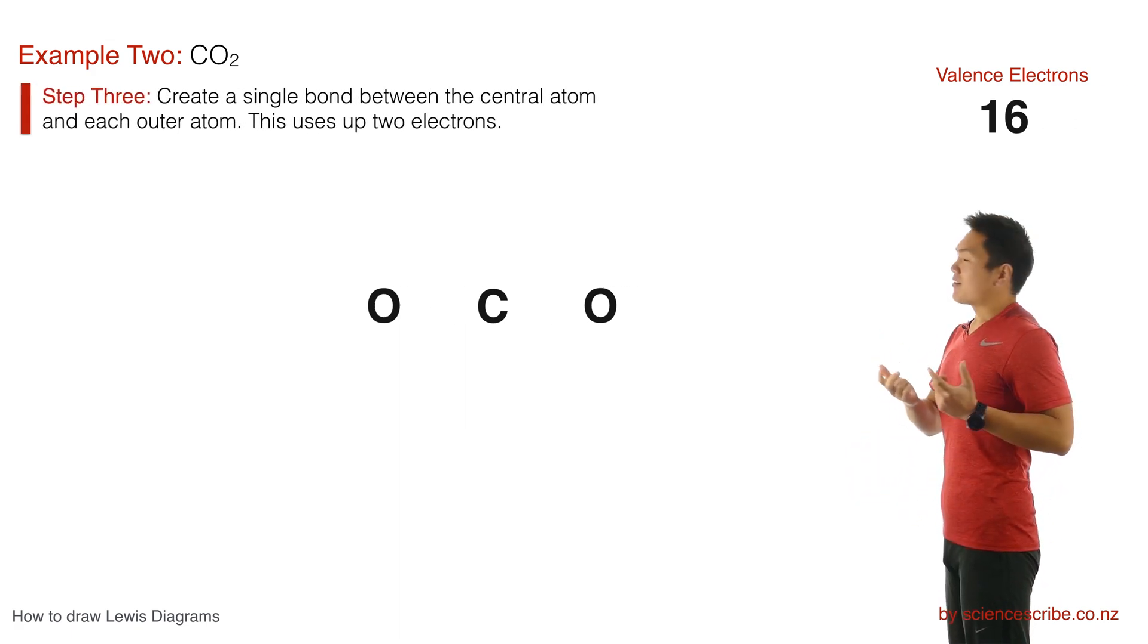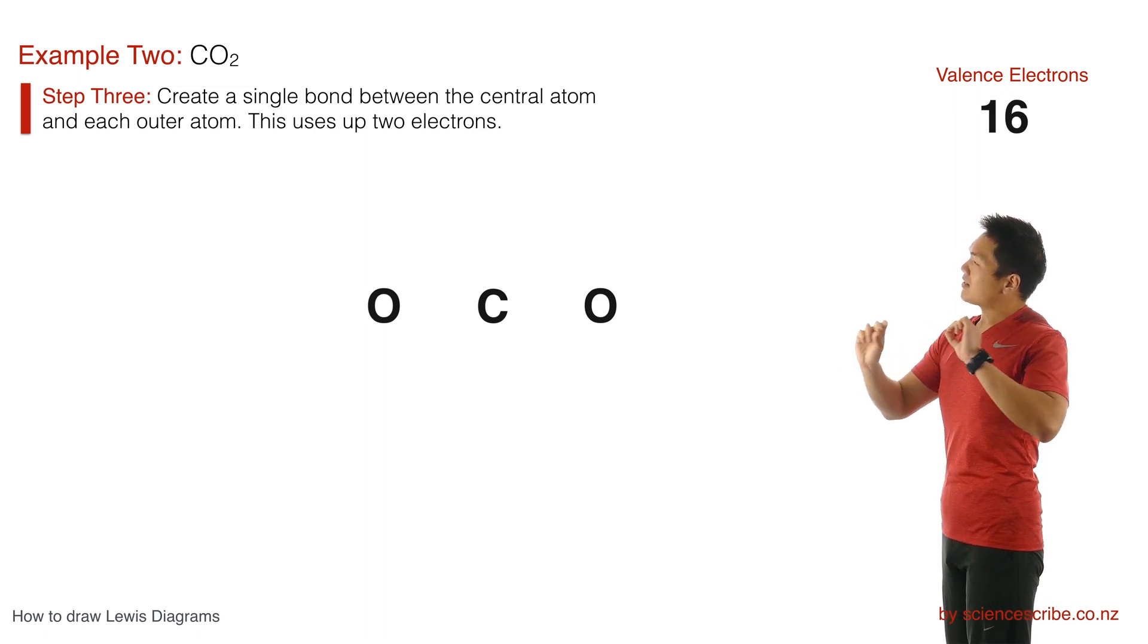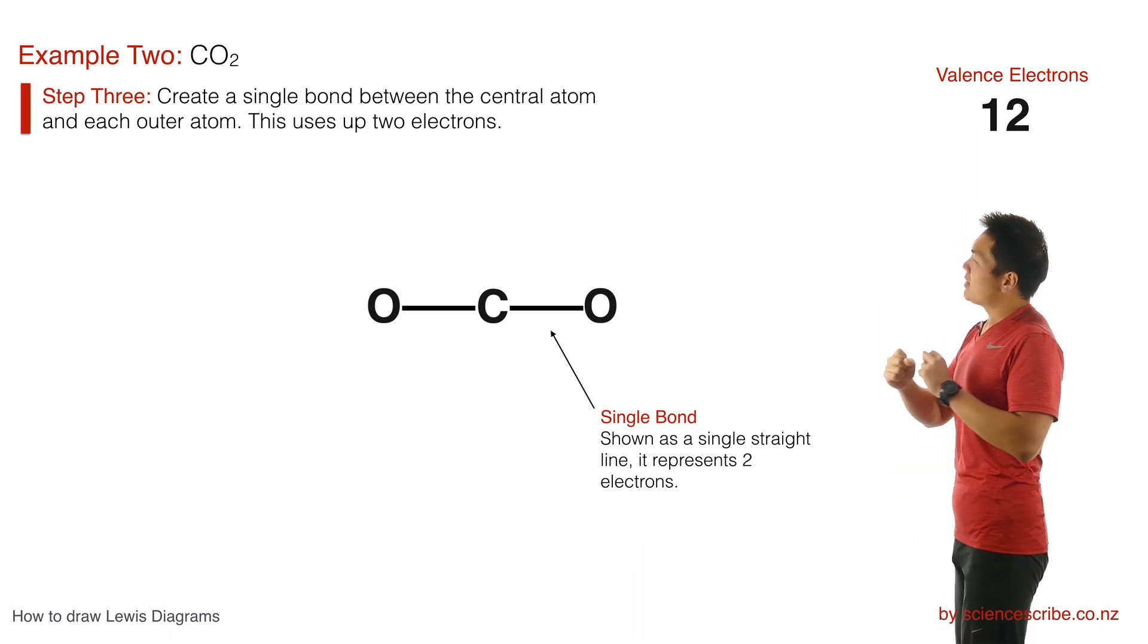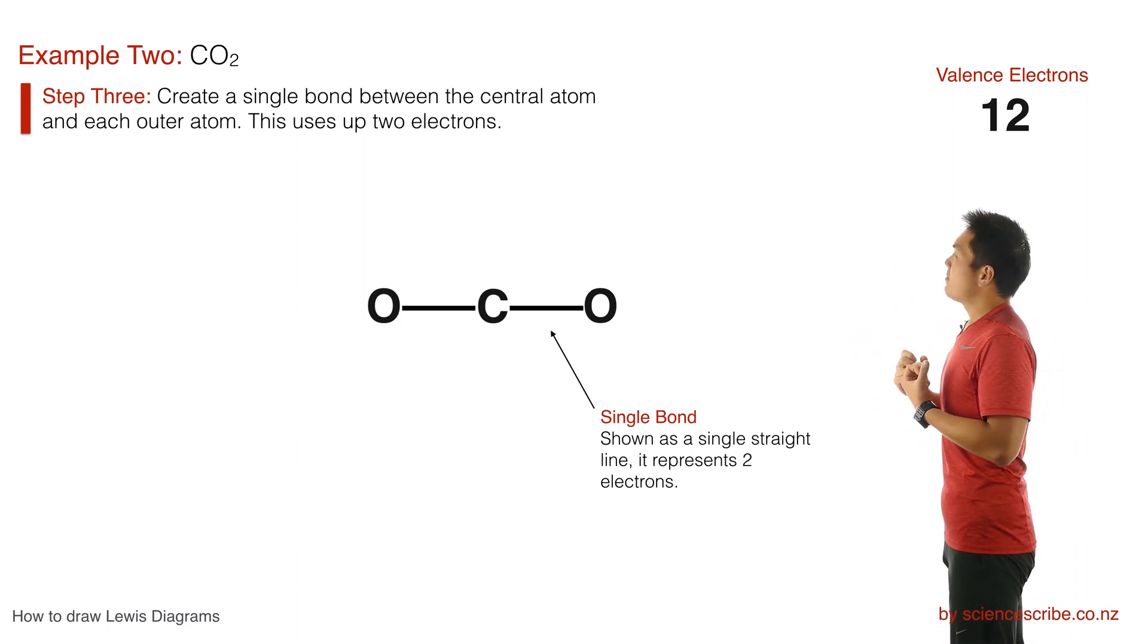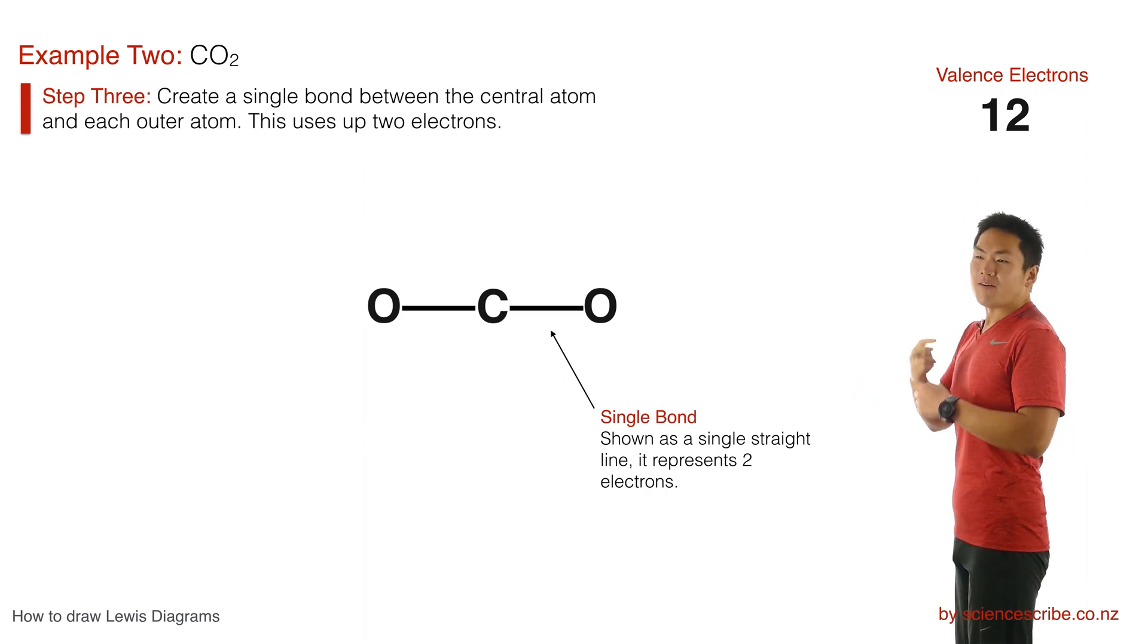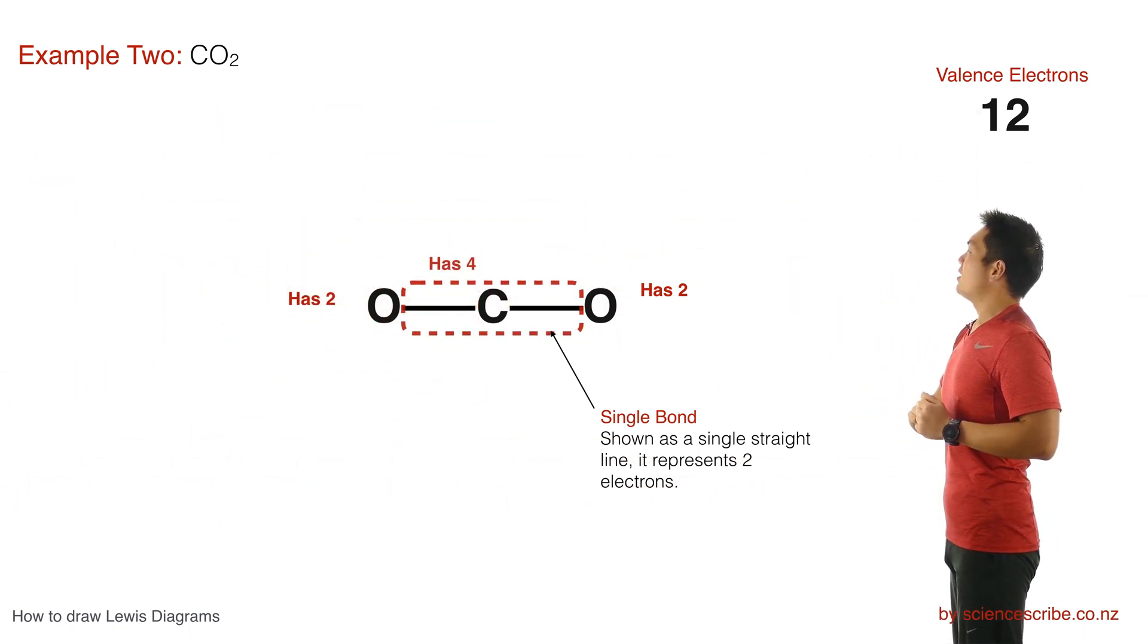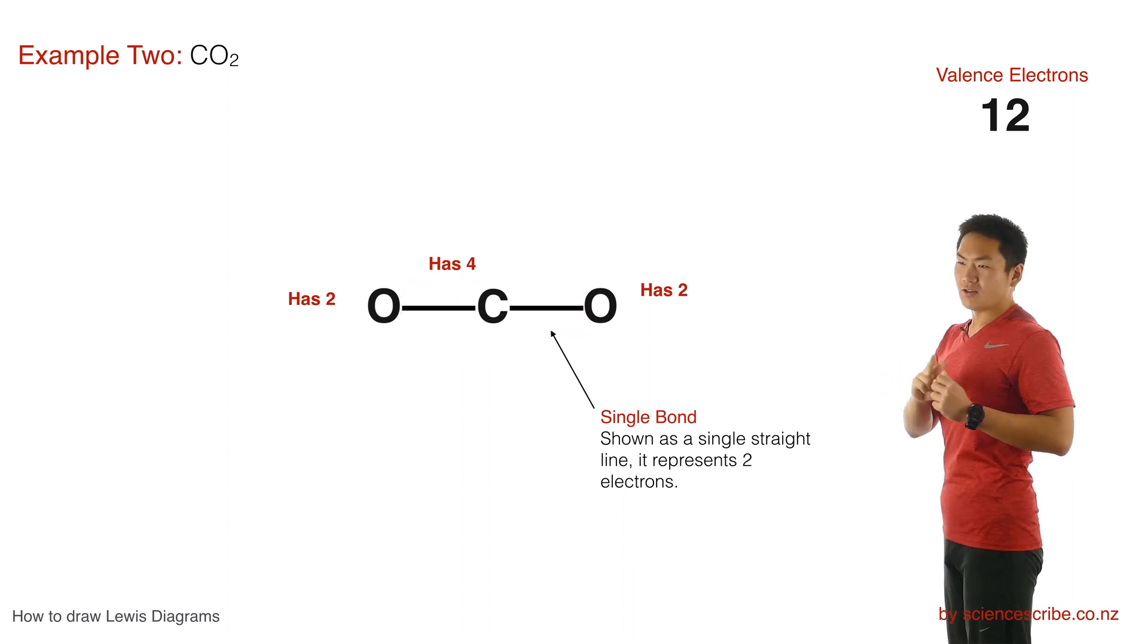After that I need to start creating single bonds from the central atom to the outer atom. Remember I show this by using a single line, which represents two electrons, which represents two electrons being shared, which means that I need to use two electrons at a time. So when I do that you can see that I'm creating two single bonds. I just used four out of my 16, so I've got 12 left. After that I'm just going to do a quick count of the electrons. Each oxygen has two. The central carbon has four because it's got two single bonds around it, and each of those bonds represents two electrons.